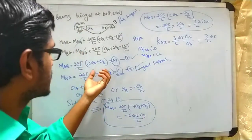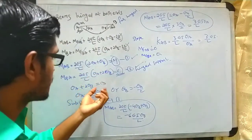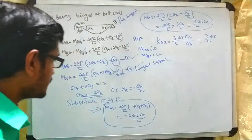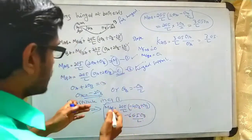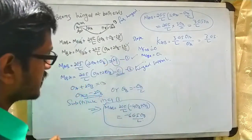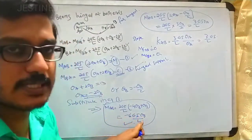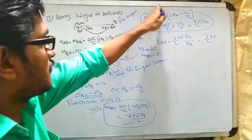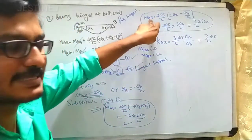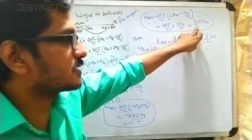From the second equation, θ_a + 2θ_b = 0, so θ_a = −2θ_b. Substituting into the first equation, we get M_AB expressed in terms of θ_b. Then using θ_b = −θ_a/2, M_AB comes out as (3EI/L)·θ_a.